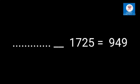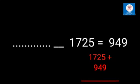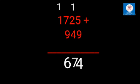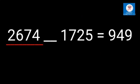Minuend is equal to difference plus subtrahend. That is 949 plus 1,725. 9 plus 5 is equal to 14. Then 4 plus 2 plus 1 carried is 7. Then 9 plus 7 is equal to 16. Then 1 plus 1 plus 1 carried is equal to 2. So the minuend is equal to 2,674. Minuend 2,674 minus 1,725 is equal to 949.